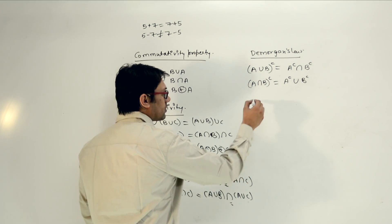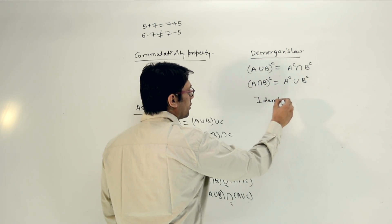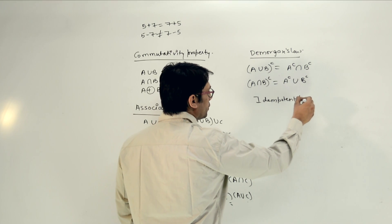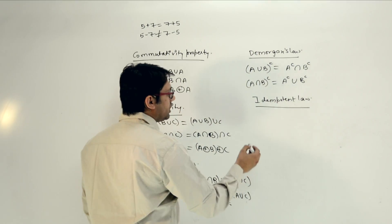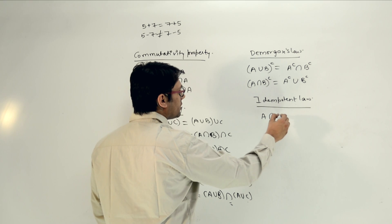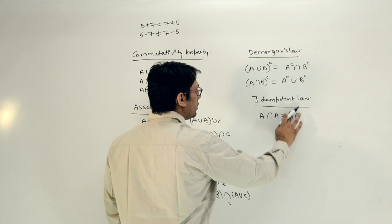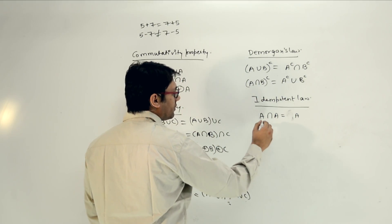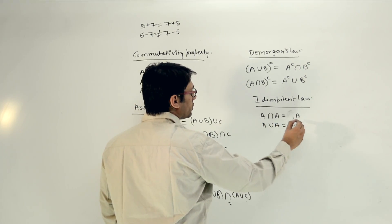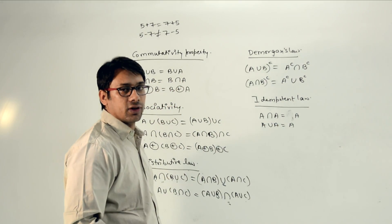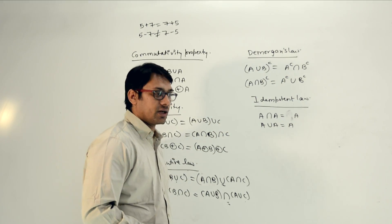The next property is called the idempotent law. If we do A intersection A, we get A. In the same way, if we do A union A, we also get A. This is the idempotent law, and it is easy to understand.